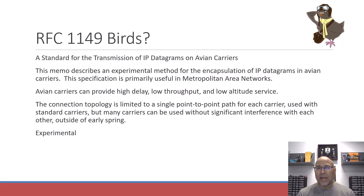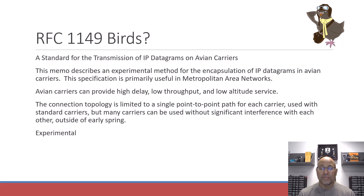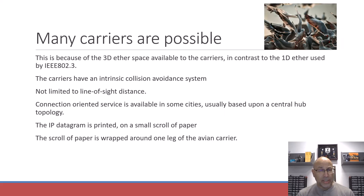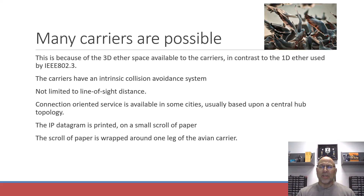So this is probably not the best mechanism for getting IP data across a metropolitan area network when spring is in the air. Of course, this was introduced as an experimental standard. One of the good things about IP datagram via Avian Carriers is that many carriers are possible because the 3D ether space is available to the carriers, in contrast to the 1D ether used by 802.3.